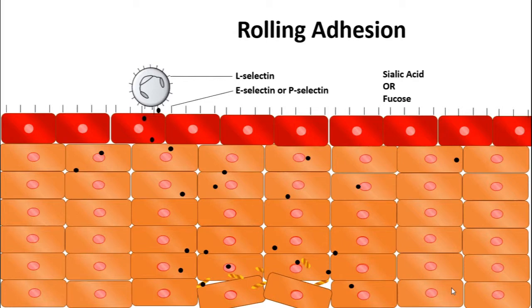Once these selectins have bound, the neutrophil is able to slow down and stop.